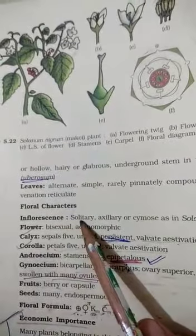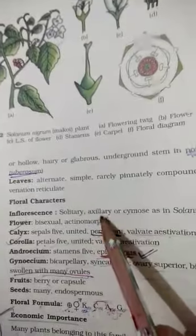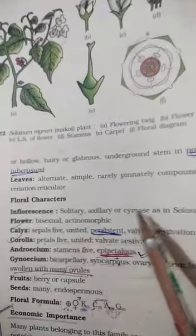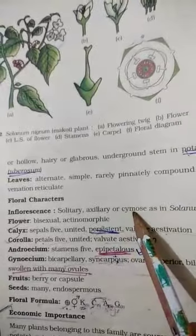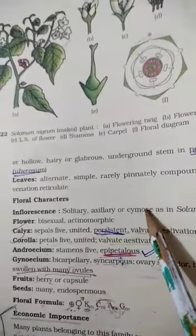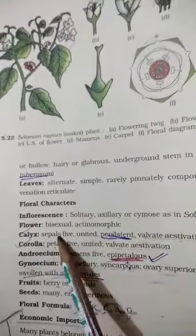Inflorescence is solitary, meaning single flowers arise. They are not in clusters. Axillary or cymose type of inflorescence is there. Cymose, as I have explained, means the older flower is at the center and younger are at the base, and the growth of the floral axis is stopped by the formation of flower.